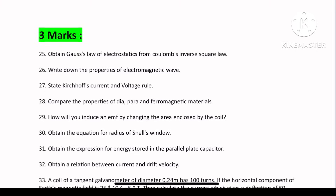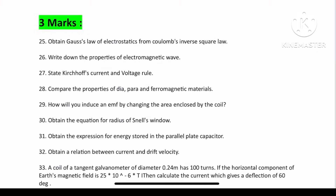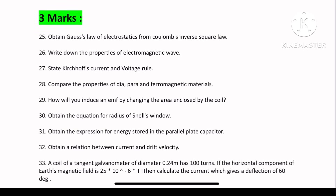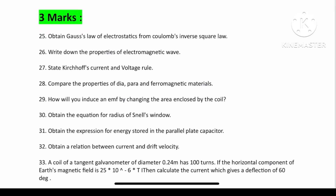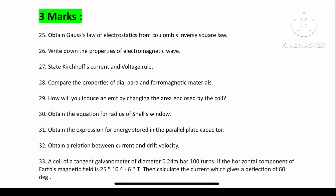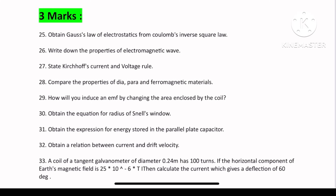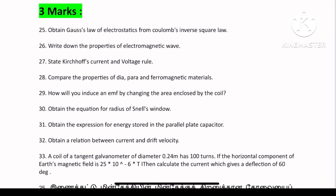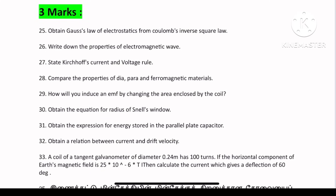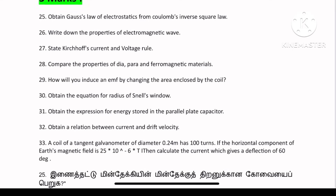You can obtain the gas law and electrostatics from Coulomb's inverse square law. You can write down the properties of electromagnetic waves. You can also use the current and voltage rule. Sometimes the current rule is not 2-mark or voltage rule. Compare the properties of diamagnetic and ferromagnetic materials. How will you induce an EMF by changing the area enclosed by the coil?